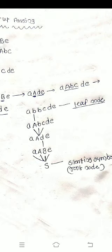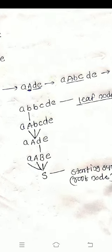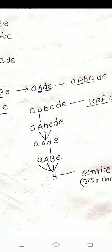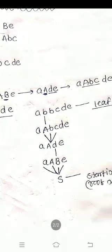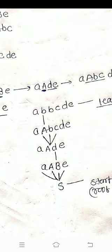So here B produces d. Next we get a, A, B, C, d, E as it is. Next one is small a, capital A, d, E. Then small a, capital A, B, E.